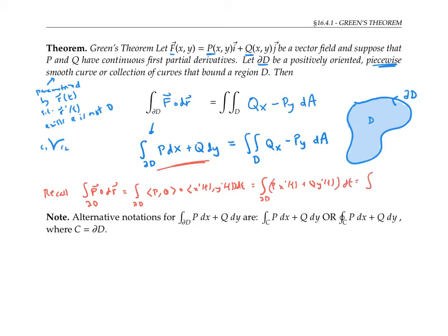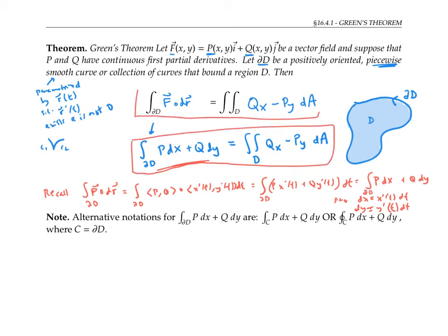Which is the same thing as P dx + Q dy, since dx is x'(t) dt and dy is y'(t) dt. That justifies that this second statement of Green's theorem is the same thing as the first.